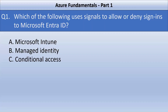First question of the series: which of the following uses signals to allow or deny sign-ins to Microsoft Entra ID? The options are Microsoft Intune, Managed Identity, and Conditional Access. The correct answer is Option C, Conditional Access.